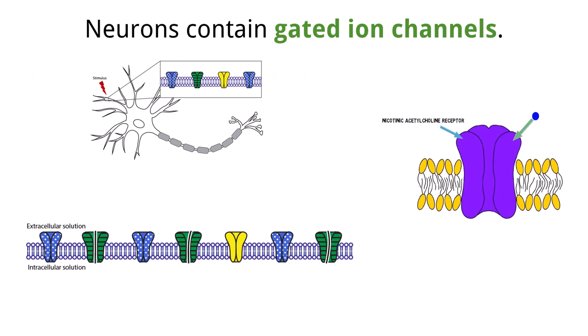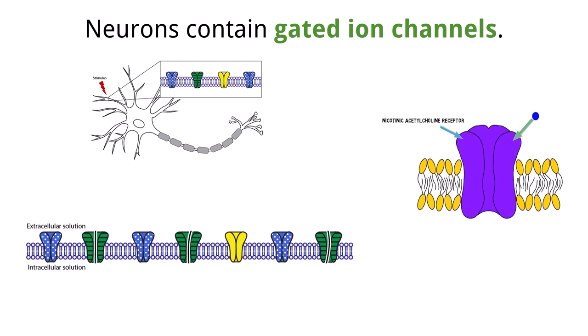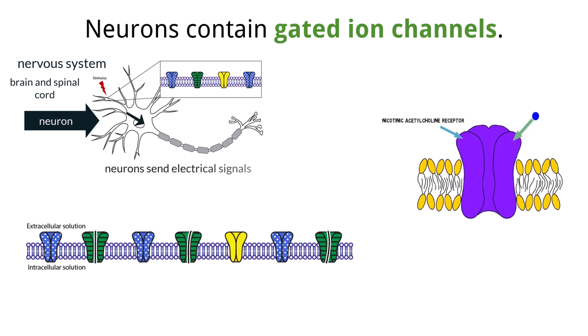In the last video, we discussed protein channels that supported the facilitated diffusion of substances across the cell membrane. For the higher-level IB curriculum, you need to know a few specific examples of these types of channels and how they work. Much of the information on this slide and the next will come back in section C2.2, neural signaling. The specific focus here is on neurons, which are specialized cells that make up our nervous system, encompassing our brain and spinal cord. To understand how the protein channels in the membrane of neurons work, we first need to recall that neurons send electrical signals to function.